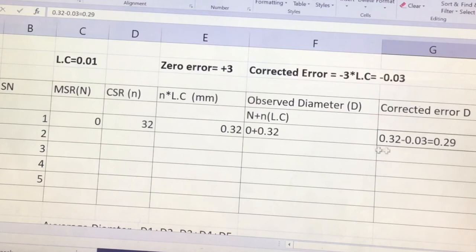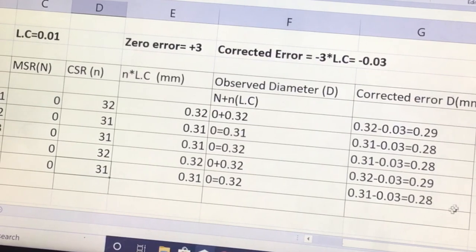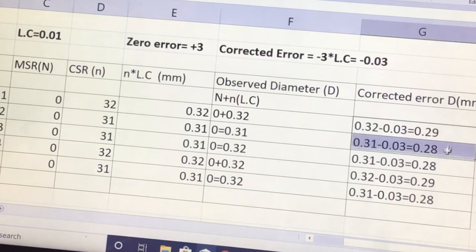So similarly we will do all the five readings in the table and I will complete this table and show it to you. Similarly I have repeated the experiment five times. I got the five readings, which were first 32, 31, 31 again, 32 and 31. And I calculated the thickness doing all the calculations. I got these readings here.